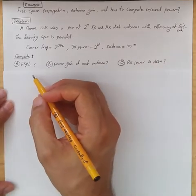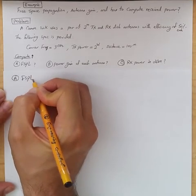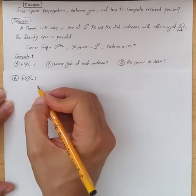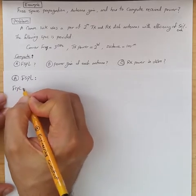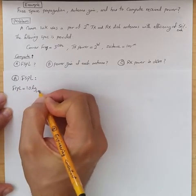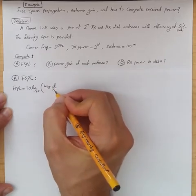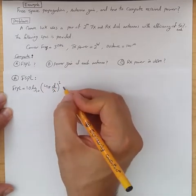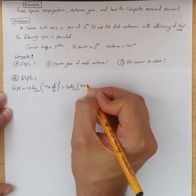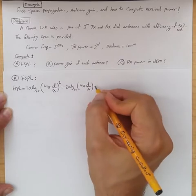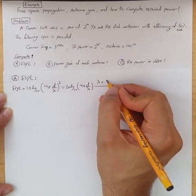So for the first part, free space path loss, we know from Friis' propagation equation that free space path loss is 10 log 10 of (4π d over λ) to power 2, or equivalently, 20 log 10 of (4π d over λ). And we know λ is c over f.